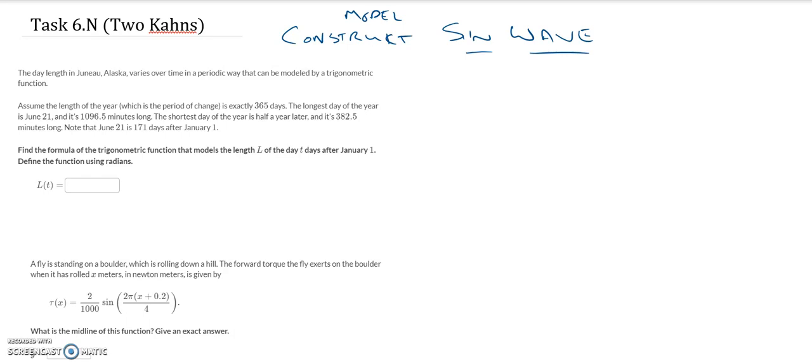Let's take a look at what we got. We have Juneau, Alaska and over time in a periodical way this can be modeled. The day length can be modeled with a trig function. Assume the length of the year is 365. If the period is 365 and we do the switcheroo trick, we already know that the multiplier is 2 pi over 365. There's our omega right off the bat.